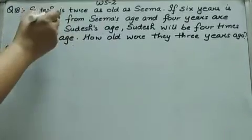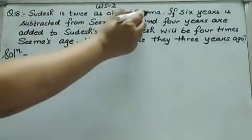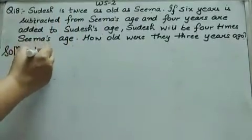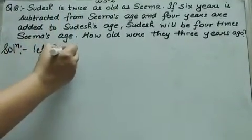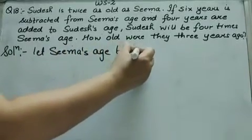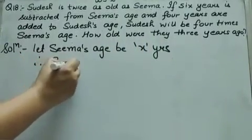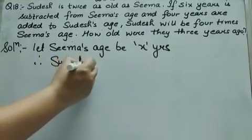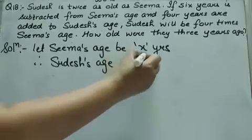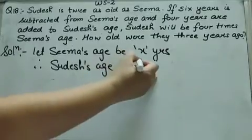Given: Sudesh is twice as old as Sima. Let Sima's age be X years. Therefore, Sudesh's age is twice Sima's age, that is 2X years.